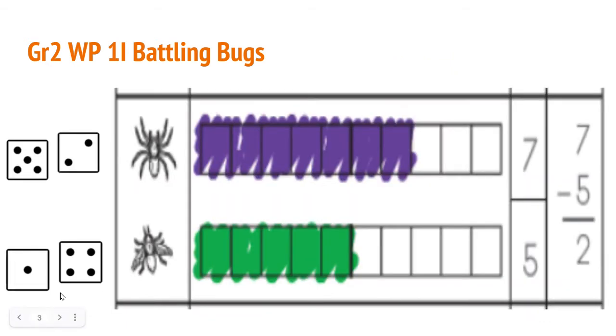The next round is exactly the same way. Here we see Sam rolled a 7, colored in his 10 strip, wrote a 7. Jillian had a 5. She colored it in and wrote it here. Together they made the subtraction statement 7 minus 5 equals 2.